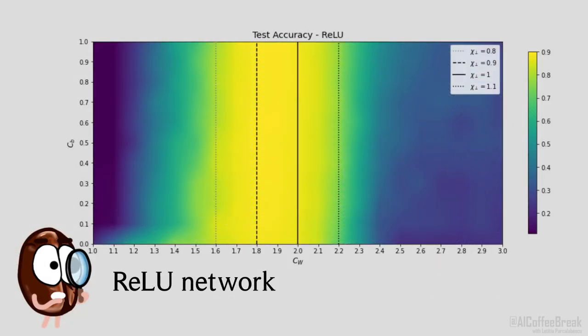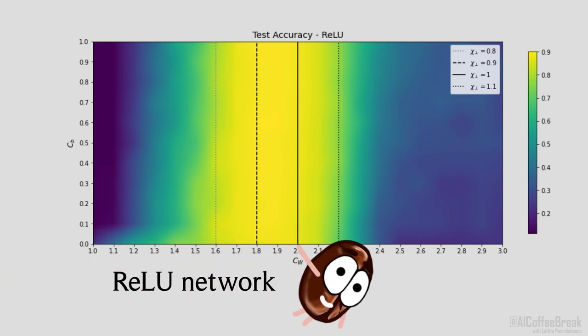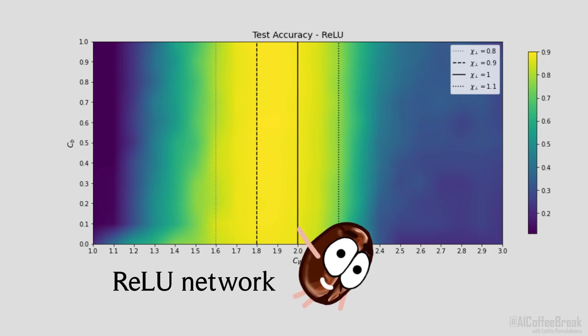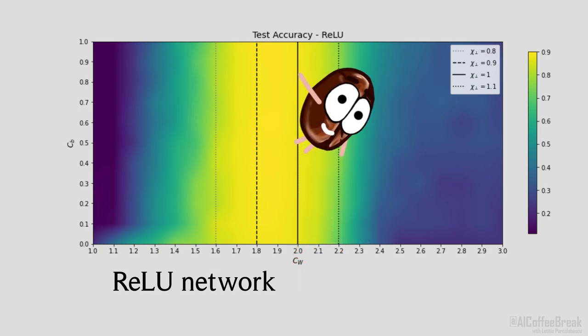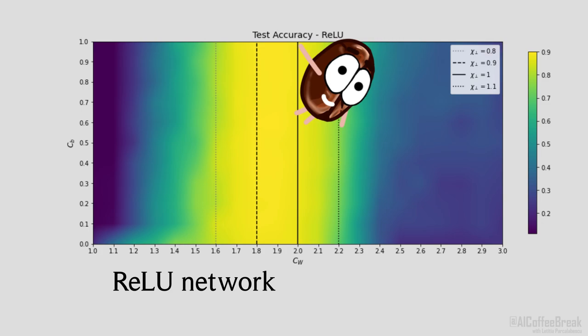Solving the previous equations, we find that there is a stable fixed point at C_b equals 0 and C_w equals 2. This is also known as Kaiming initialization, which is just a special case of our methods. ReLU has another special property. When C_w equals 2 and C_b is not equal 0, the variance grows linearly in the layer number. Since this is not an exponential growth, this is technically also a non-trivial fixed point.